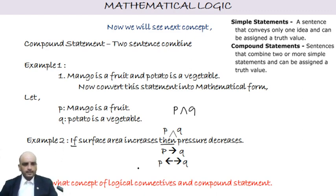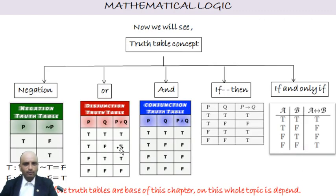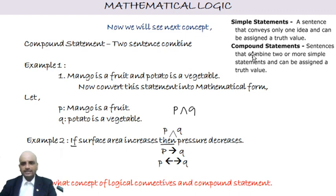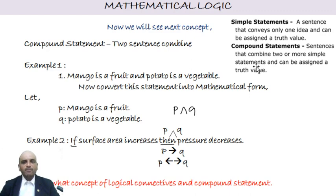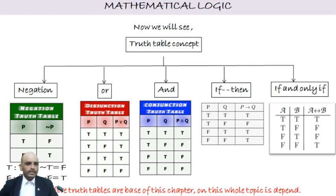There are two types of statements: simple and compound. A simple statement conveys only one idea and can be assigned a single truth value. A compound statement combines two or more simple statements and is also assigned a truth value. Understanding how to convert sentences into these mathematical forms is the core skill here.